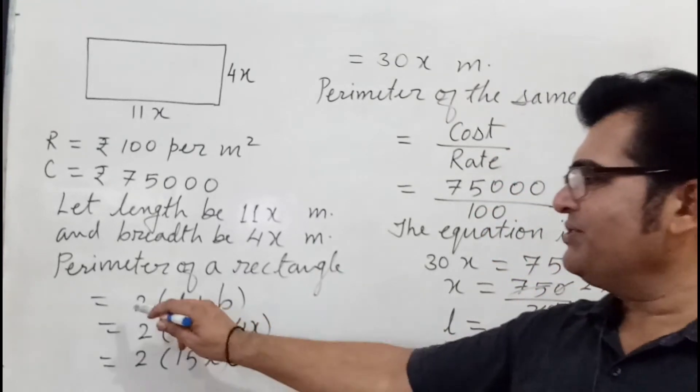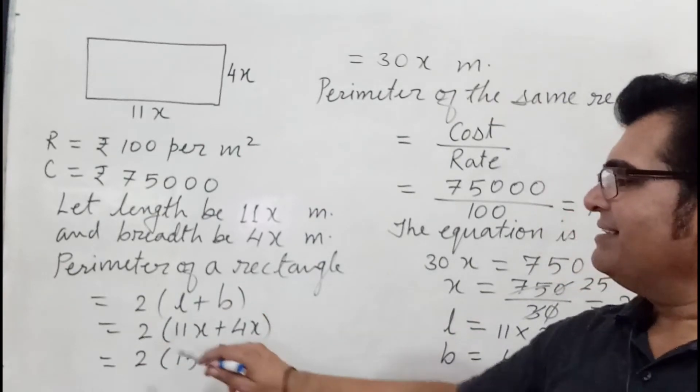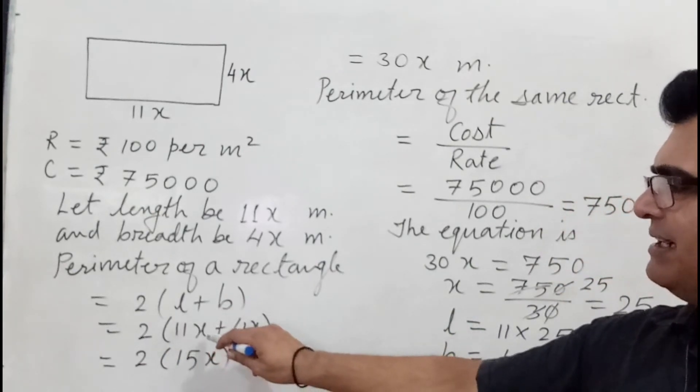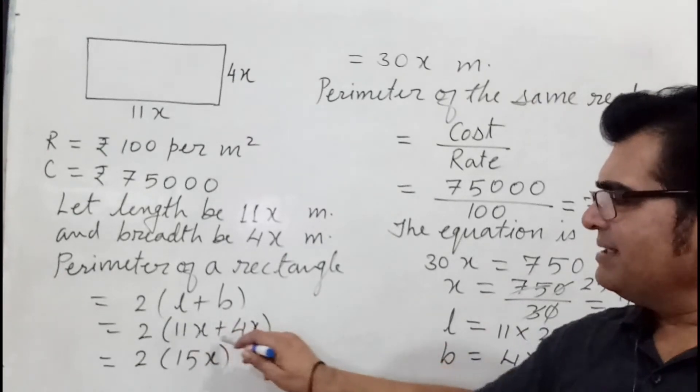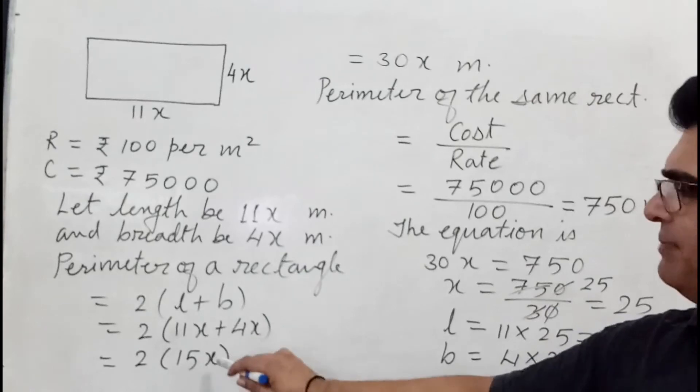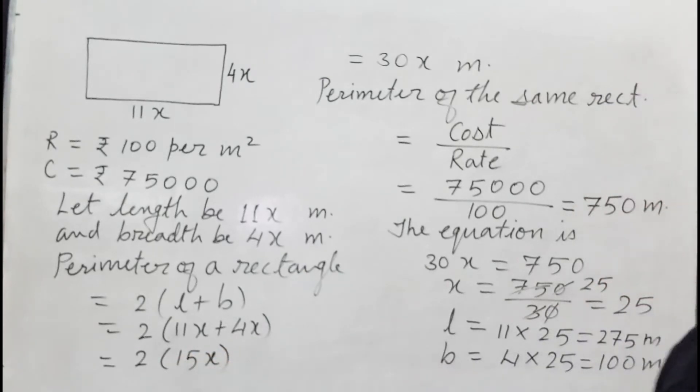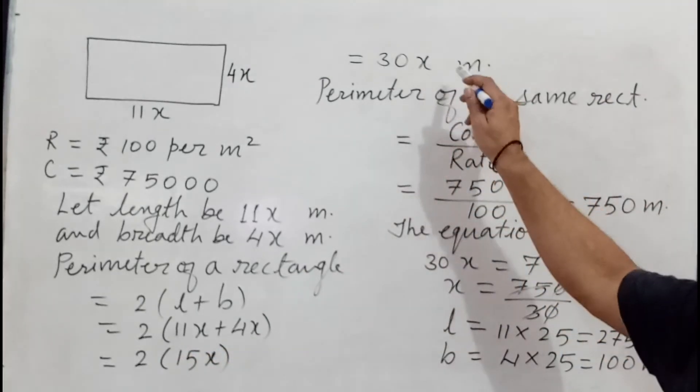So perimeter of a rectangle formula is 2 times (l + b). Then we put the values: 2 times (11x + 4x). Then simplify: 11x plus 4x becomes 15x, so 2 times 15x becomes 30x meters. So perimeter of the rectangular plot is 30x meters.